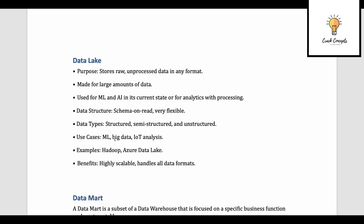The next concept is data lake. The purpose of a data lake is to store raw and unprocessed data in any format — it could be CSV files, JPG files, or any sort of file. It stores raw unprocessed data, has unstructured data, and is made for large amounts of data. It is used for machine learning, AI, and analytics with processing. The data structure is schema-on-read, making it very flexible.